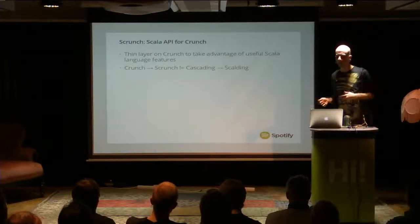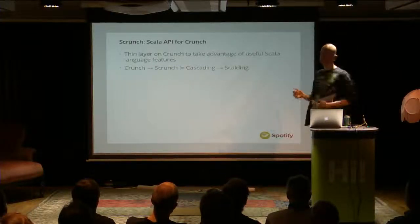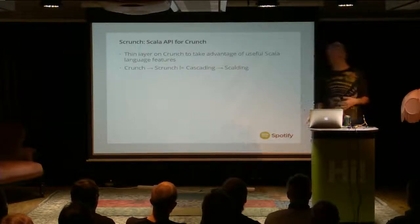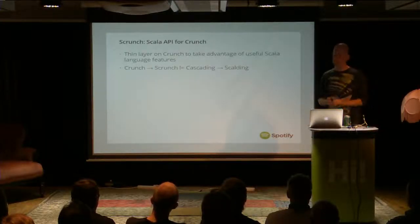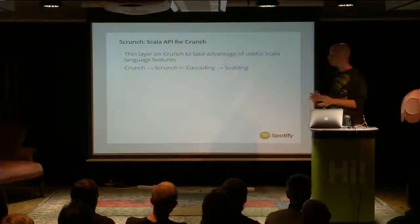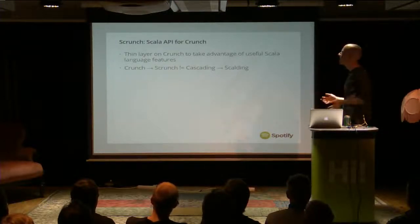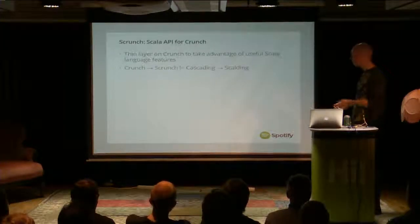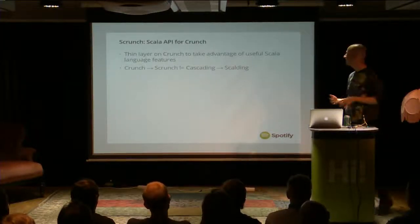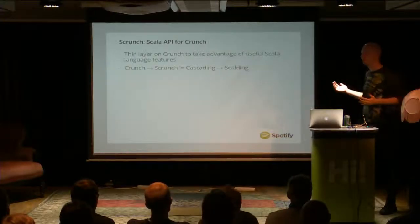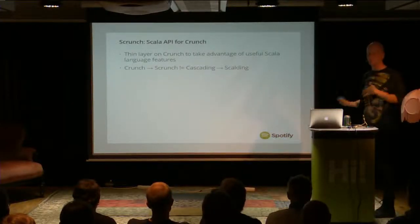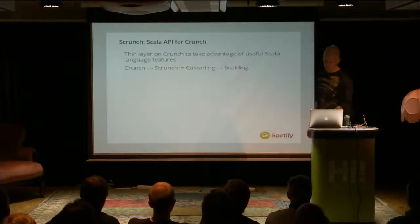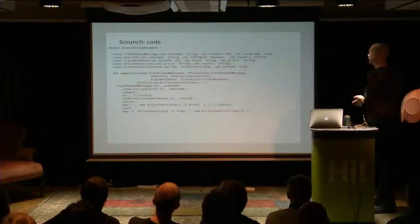Scrunch was released recently — last year or so — and it's a thin layer on top of Cascading which takes advantage of Scala language features to make it a little bit less of a pain to use. I want to contrast that the difference between Crunch and Scrunch is not really the same as the difference between Cascading and Scalding, because Scalding is a whole new DSL built on top of Cascading, whereas Scrunch is just a really thin layer to take advantage of some Scala language features.